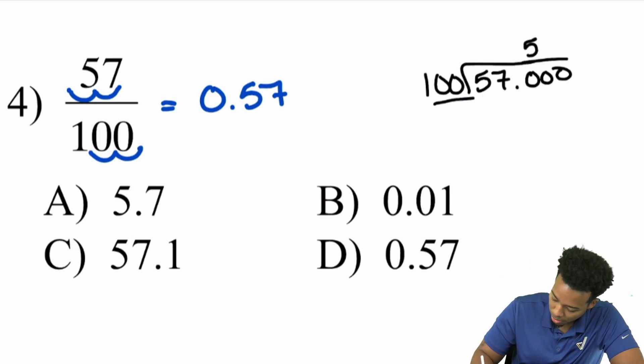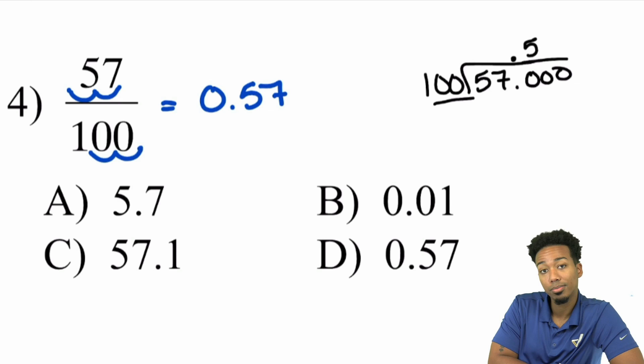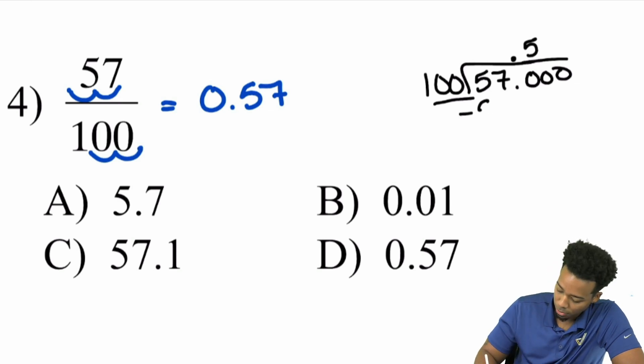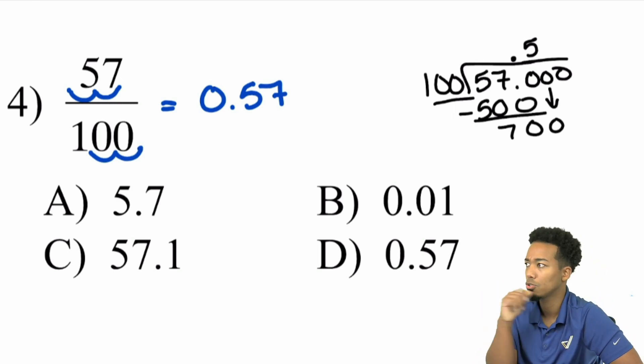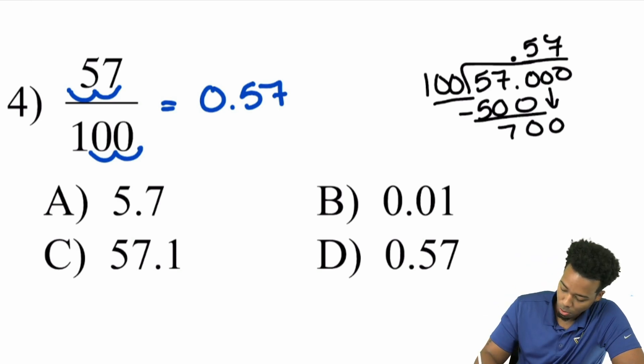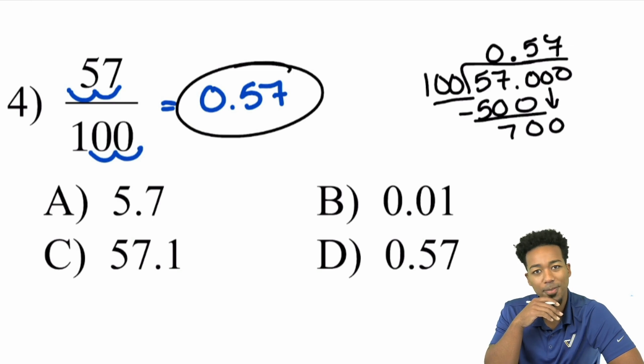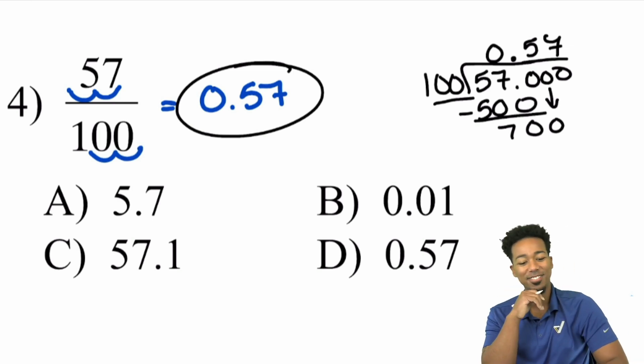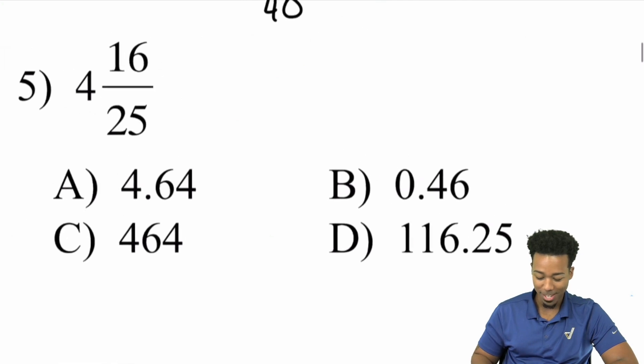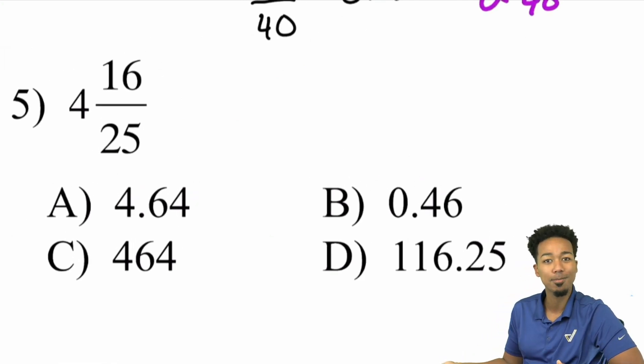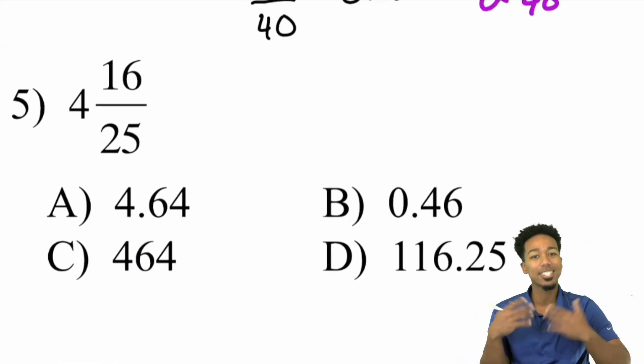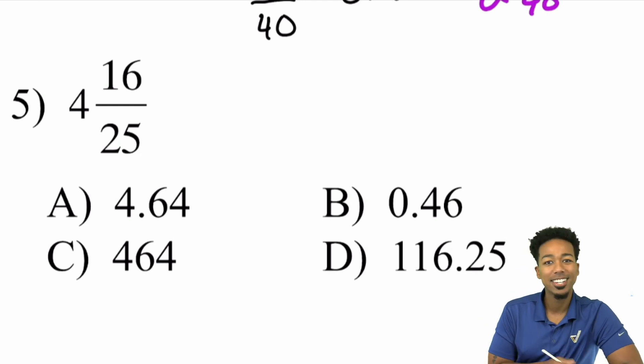So we subtract the 500. We get 70. So then we bring this zero down and we say, how many times does 100 go into 700? Seven times. And so that'll be 0.57, exactly as we saw before, right there. And so there you have it. And we're good. And we'll do one more over here, one more to cap things off, just to show you another one with a mixed number, and then you're going to proceed into the worksheet, try this thing out, and you're good to go.